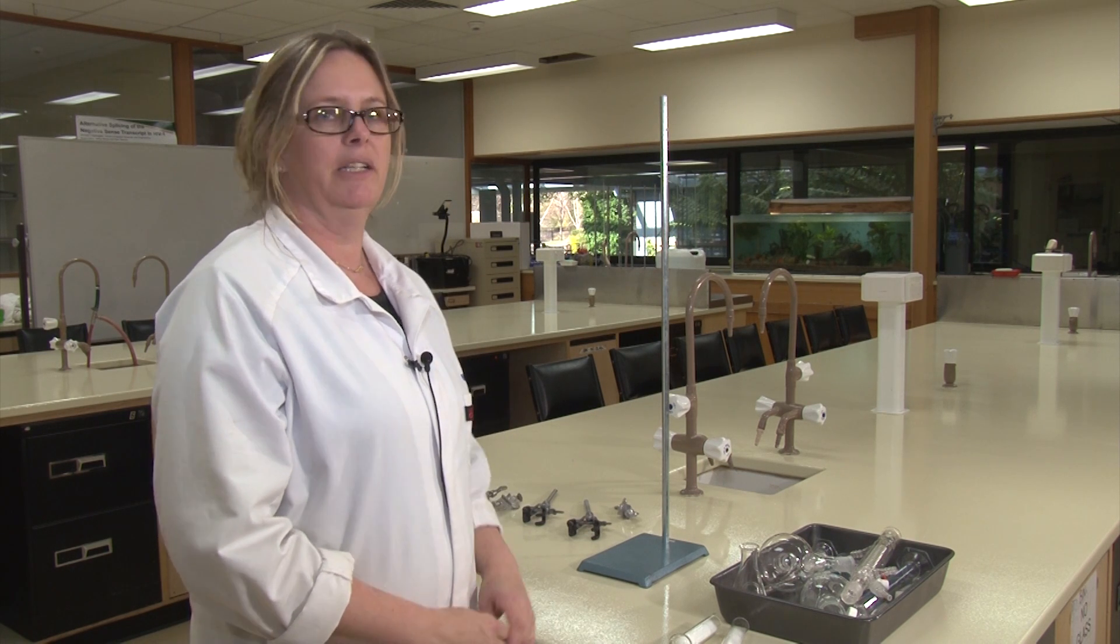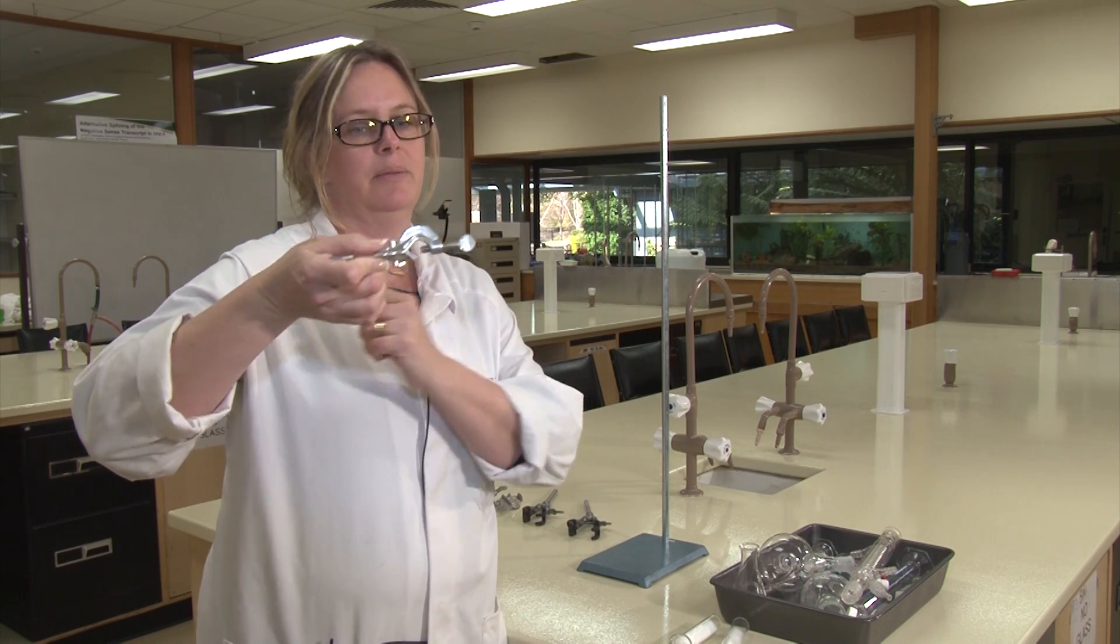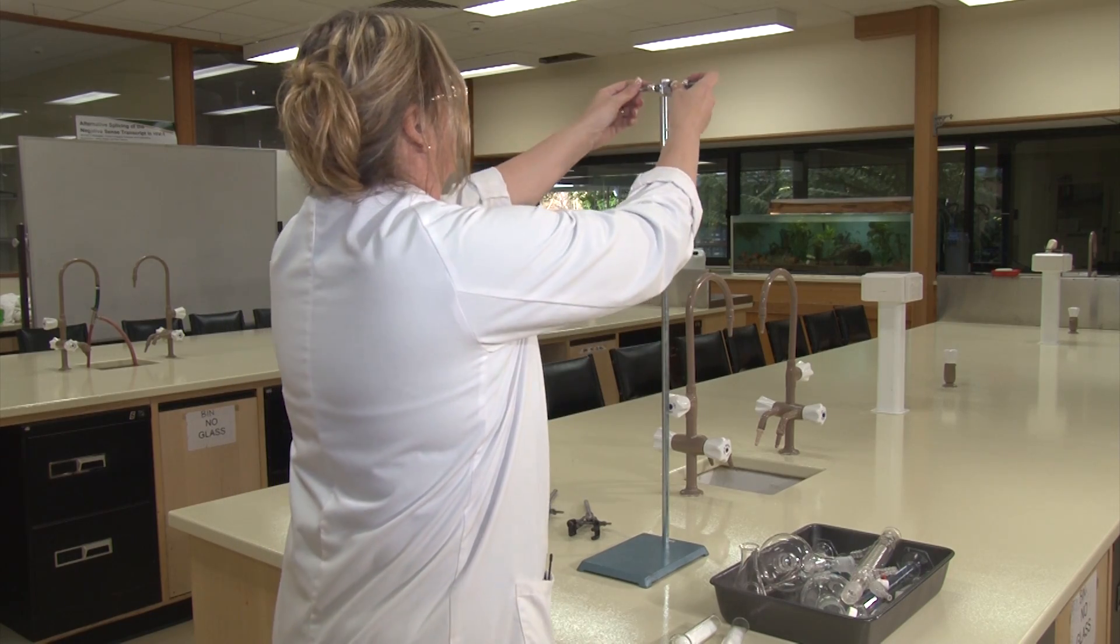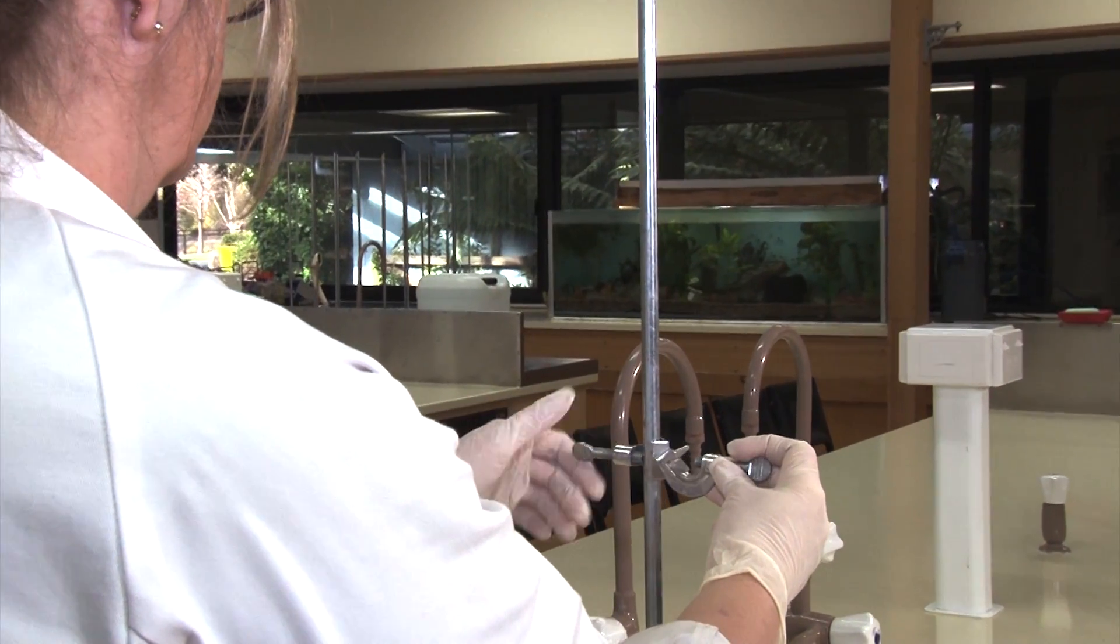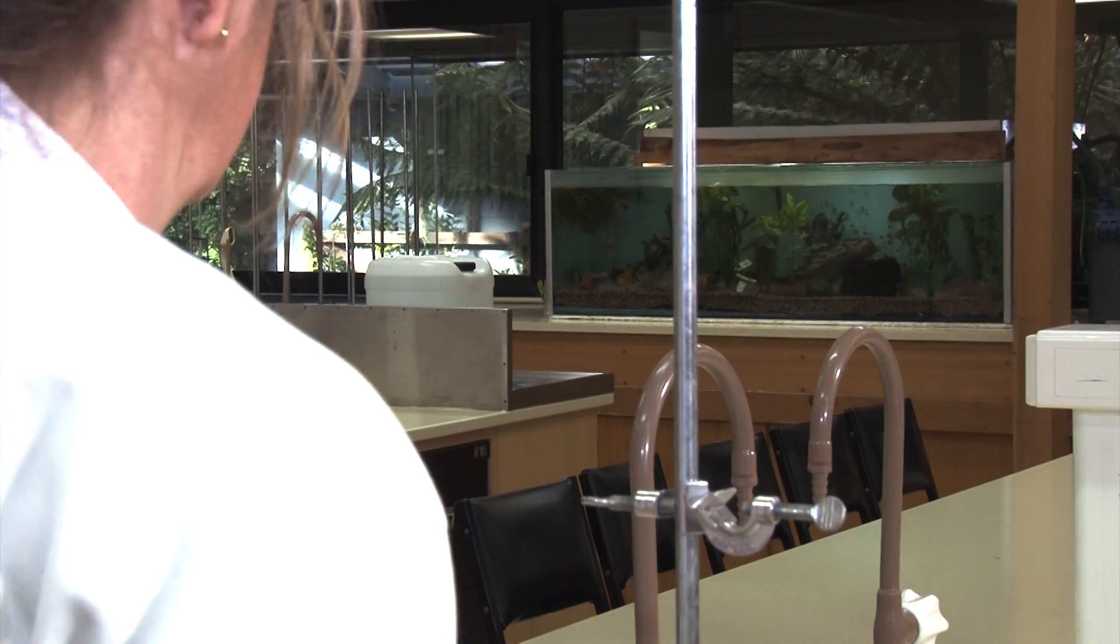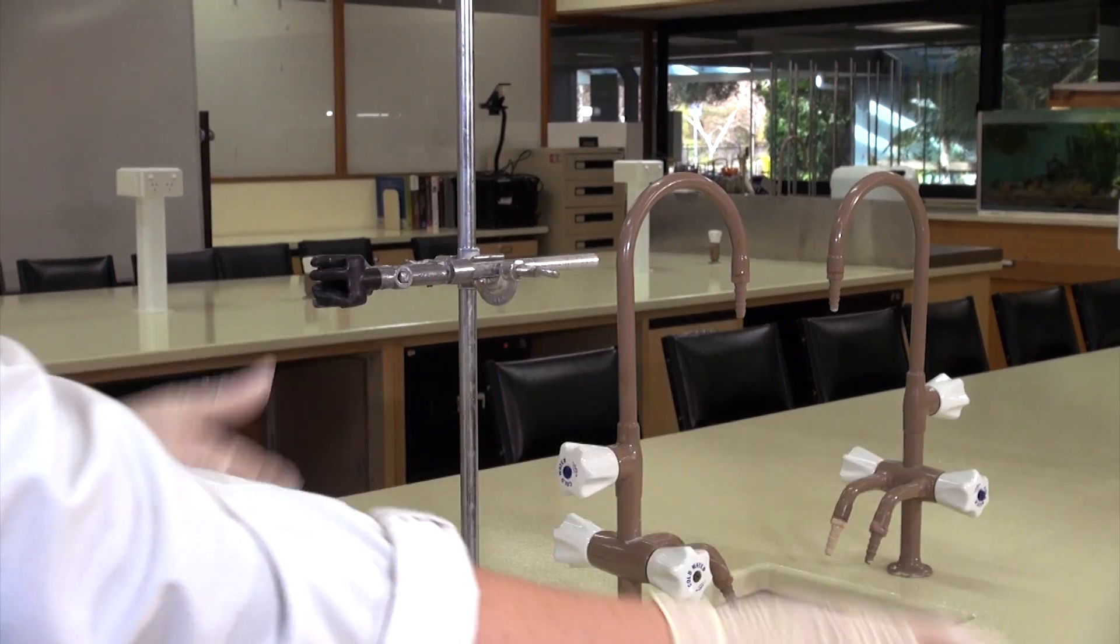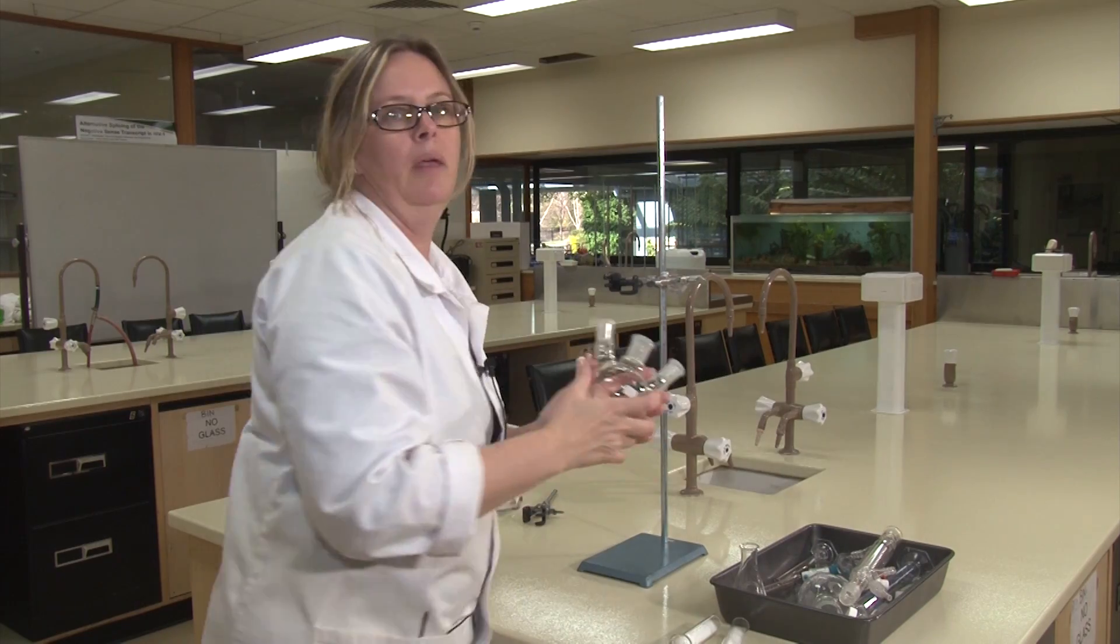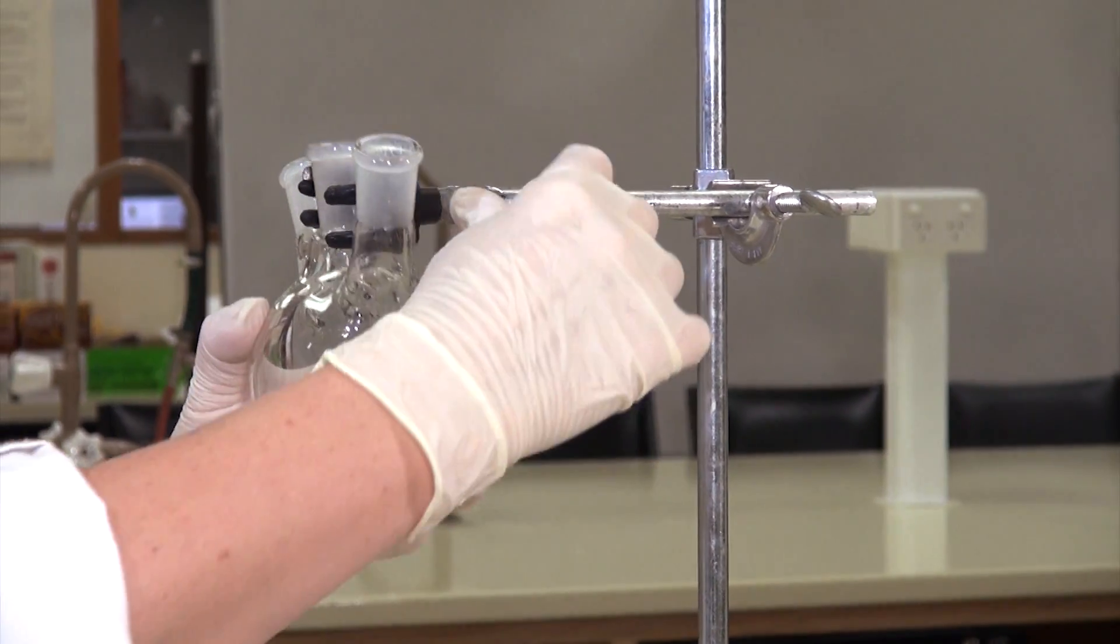It shouldn't take too long to get the glassware together for a Grignard reaction. Start with a clamp. Make sure you put it on this way, not this way. We're going to use a 3-neck flask for this reaction. Clamp from the middle neck because it's the strongest.